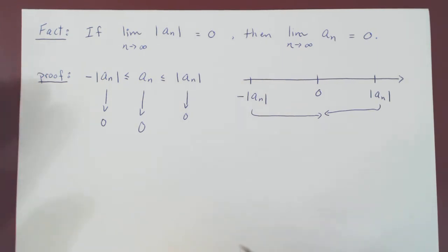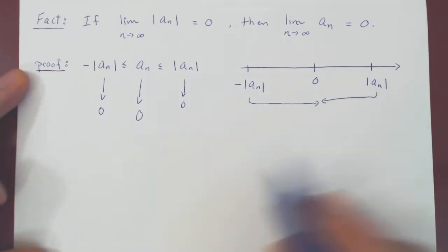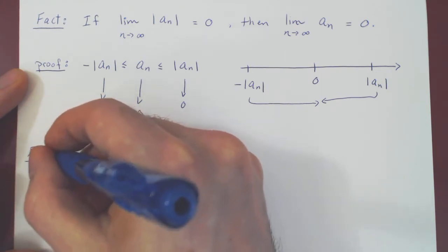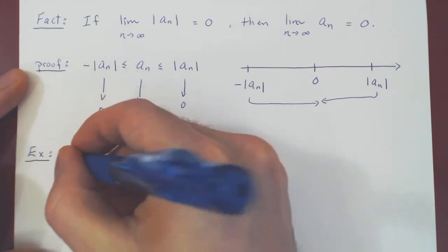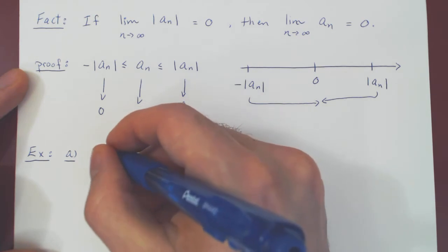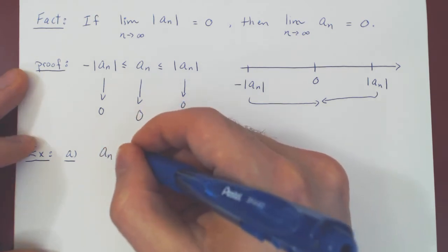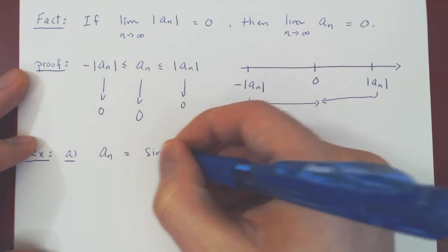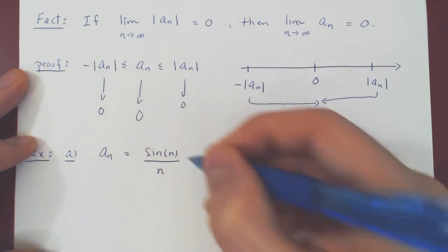And that's it. Let's now look at two examples. Suppose the sequence a_n is sine of n over n.